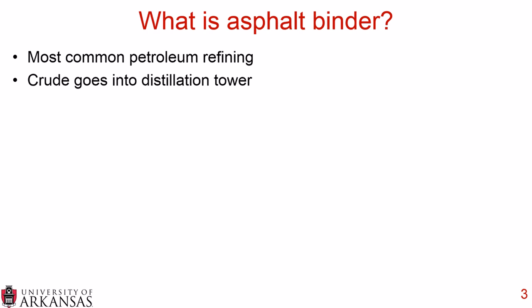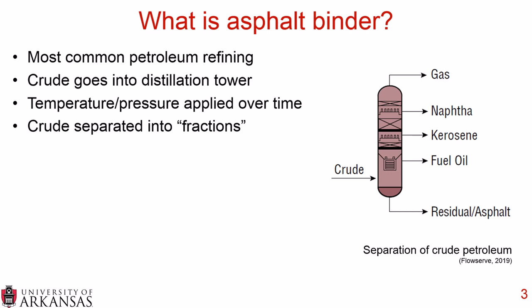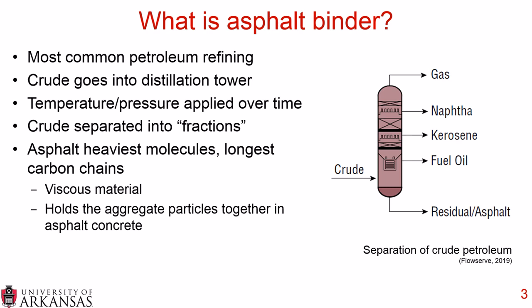Asphalt binder is most commonly derived from petroleum refinery, where crude goes into a distillation tower. Temperature and pressure are applied over time and the crude is separated into fractions — including gas, naphtha, kerosene, fuel oil, and a whole bunch of other things. Way down at the bottom is the residual, which we call asphalt.